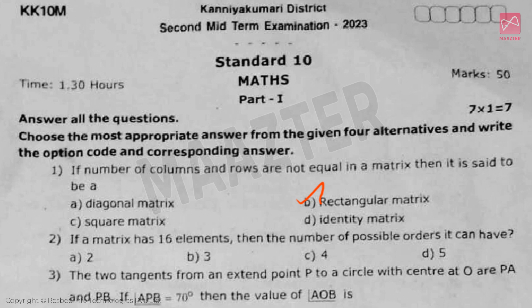Next, if a matrix has 16 elements, then the number of possible orders it can have, answer is option D.